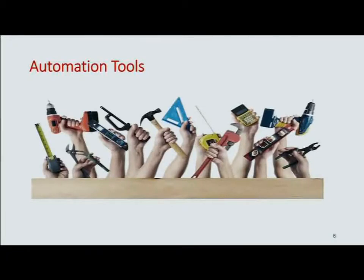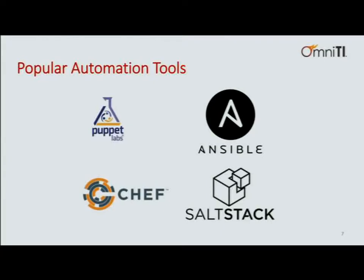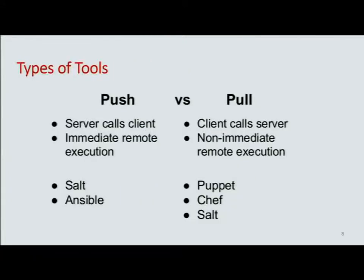If you do decide to go with EC2, the first thing to look at is what kind of tools you have. These are the most common general-purpose provisioning tools: Puppet, Chef, Ansible, and SaltStack. If you've heard of one of these, you might also know there are two types of implementations, and these four belong to one or the other type — except Salt, which belongs to both.